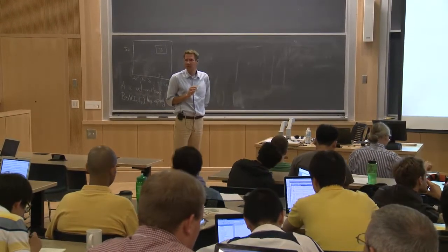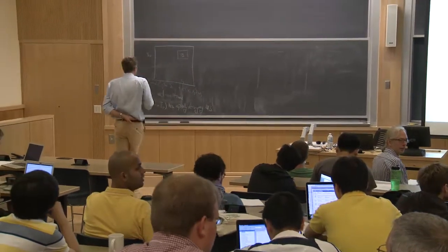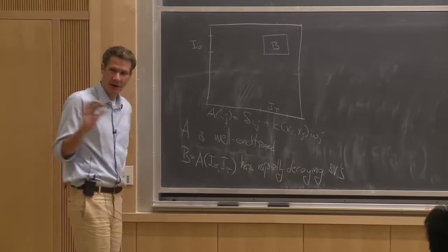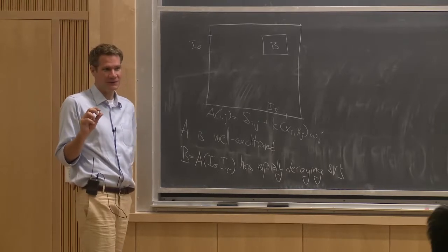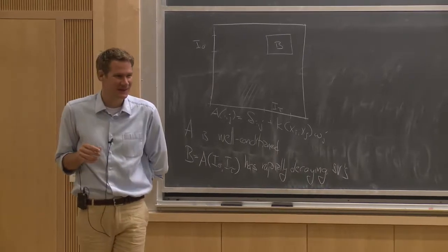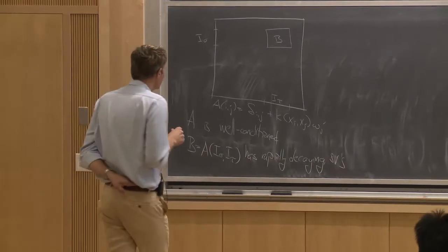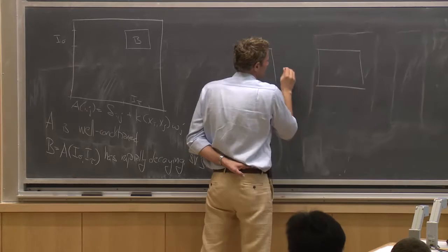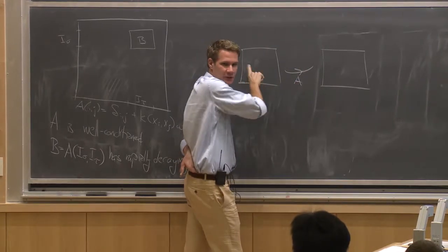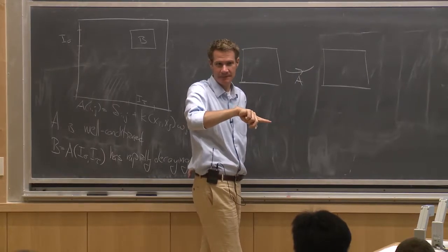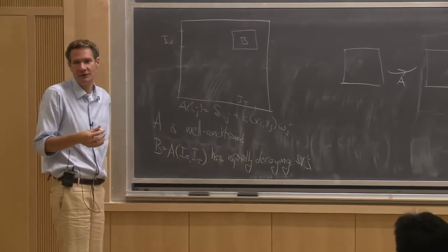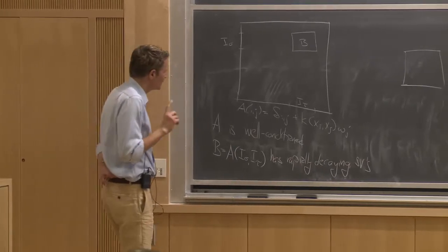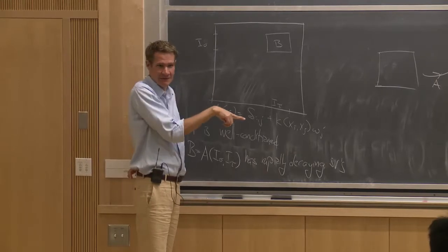Let's continue while we wait for the last people. I got a few questions that clarified I should address something right away. I'm using the notation A for a matrix — it's context dependent. On some slides it means something different. In the last lecture, A was always a matrix that maps sources in one region to targets somewhere else, with rapidly decaying singular values — extremely ill-conditioned.